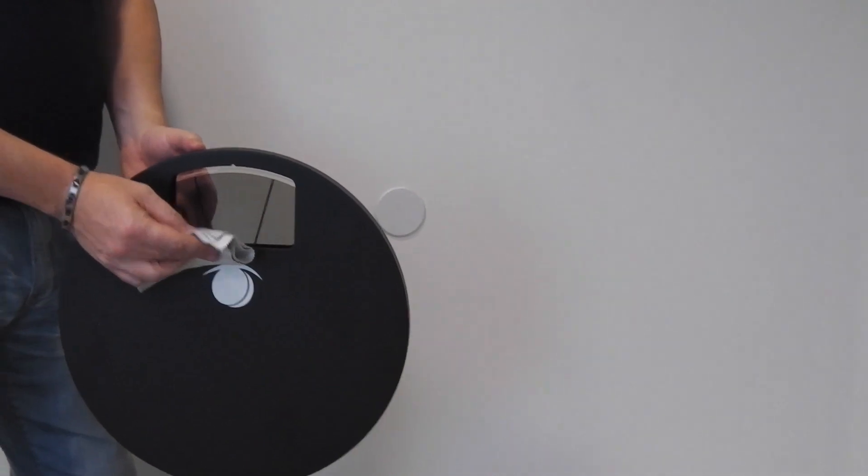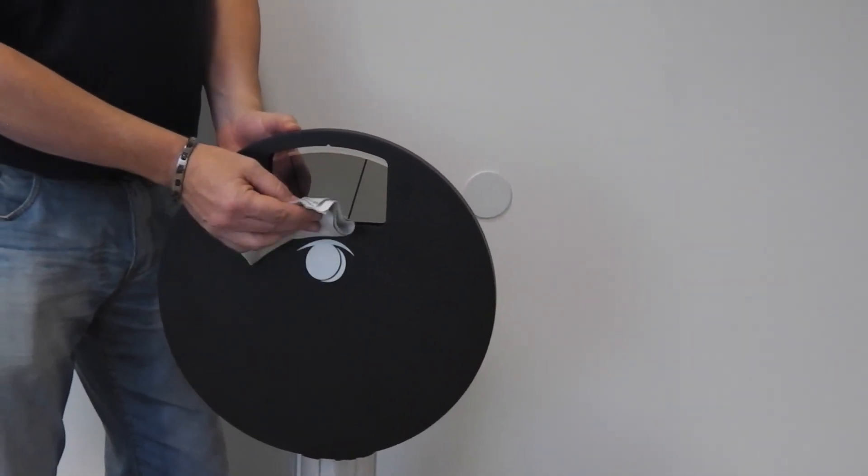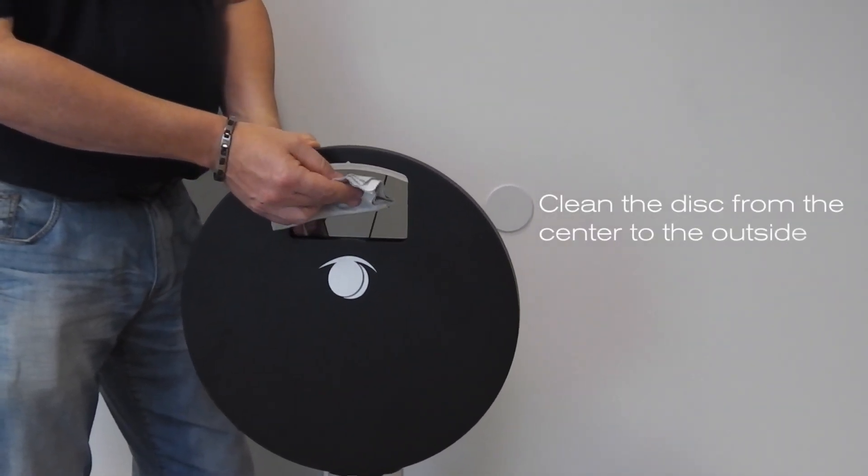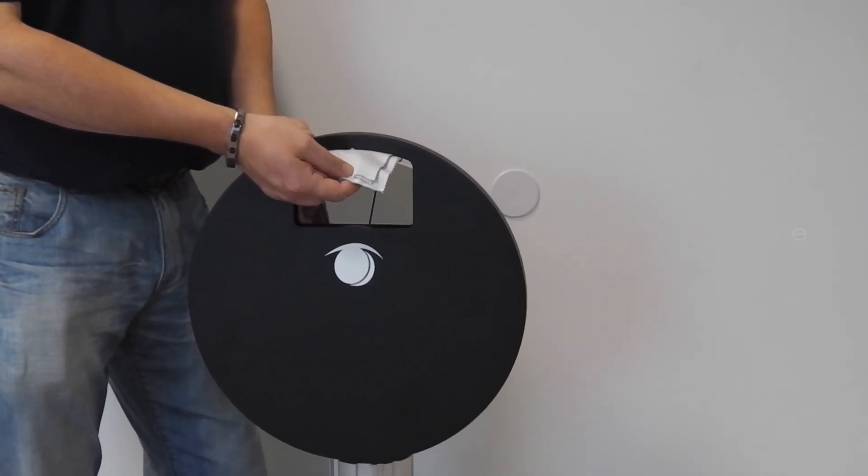The cleaning process is fairly quick. Just clean each of the 12 segments of the filter wheel, from the centre to the outside, just wiping fairly carefully.